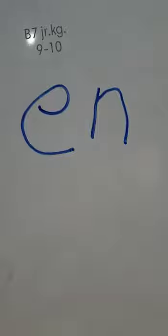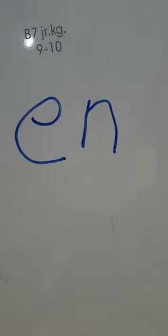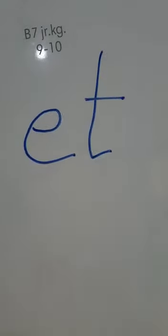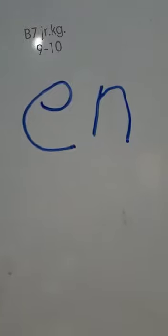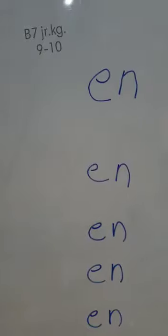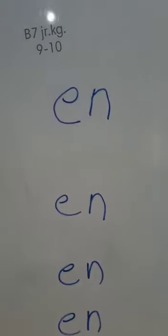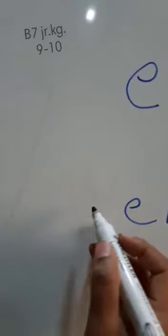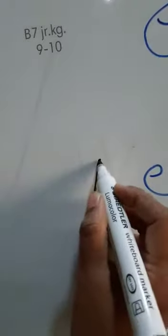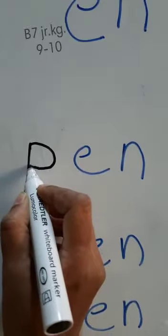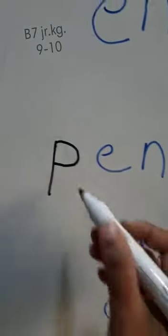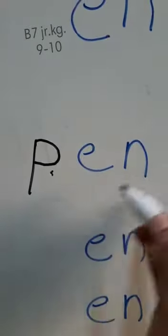This and this is E and N, en, et. Now let's see some examples of en. Now see, the en words. If I write in front of en, P, what it will be? P, en, pen.